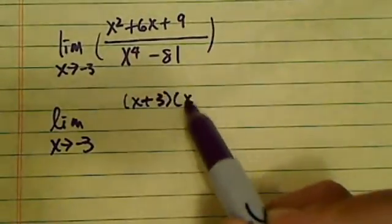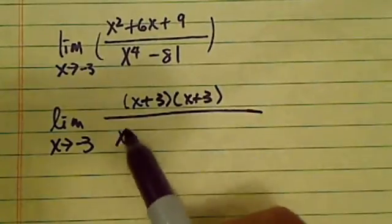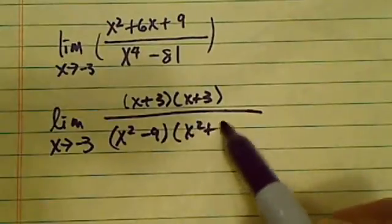You have x plus 3 on top. It's basically squared down there. And then you have here x squared minus 9 and then x squared plus 9.